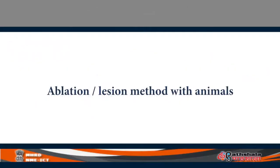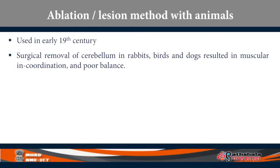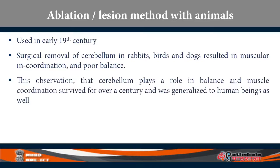The ablation method — the lesion method on animals — is a very old method used in the early 19th century. Surgical removal of the cerebellum in rabbits, birds, and dogs resulted in muscular incoordination and poor balance. This observation that the cerebellum has some role in maintaining balance and muscle coordination survived for the next century or so. From animals they generalized this observation to human beings, and to some extent it is true. The cerebellum also has some role in controlling prosody and phonological processing.